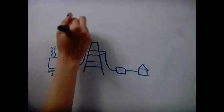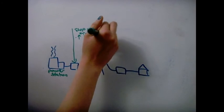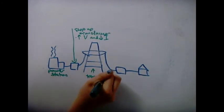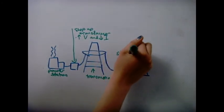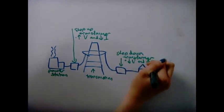Transformers are used to step up the voltage during transmission so that current can be reduced, therefore decreasing the amount of energy transferred as heat. Step-down transformers are then used so that the voltage is suitable for use in factories and houses.